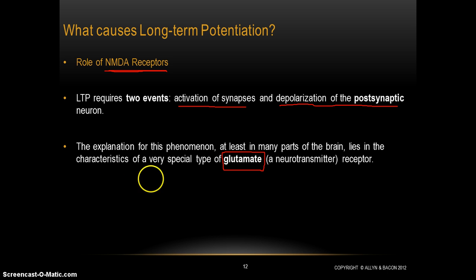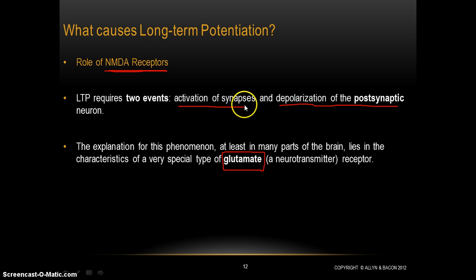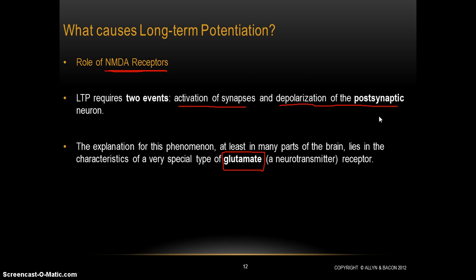We've said in the last video that two things have to happen in order to see long-term potentiation. There has to be activation of the synapse, which basically means stimulation of the presynaptic neuron, and also depolarization of the postsynaptic neuron.